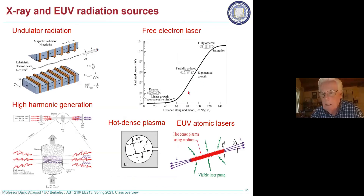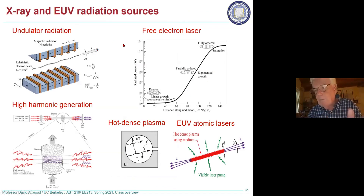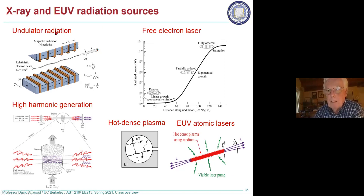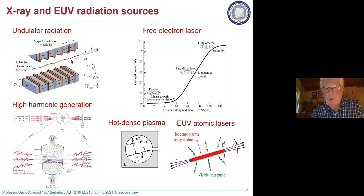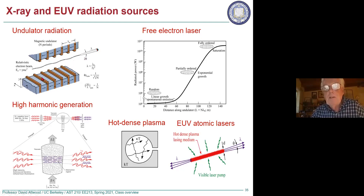The next part of the course covers sources of radiation. We'll talk about synchrotron radiation with two main source types: an undulator and bending magnet radiation. Undulators produce very intense radiation — tens of watts — in a relatively narrow bandwidth. Mostly we'll focus on undulator radiation but will mention bending magnets. Some of you already use the ALS, APS, or Spring-8 in Japan.